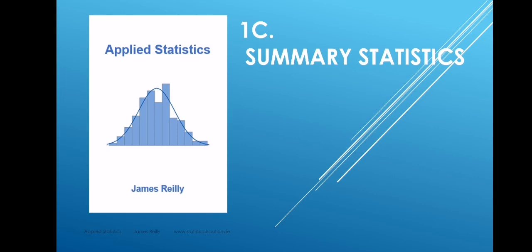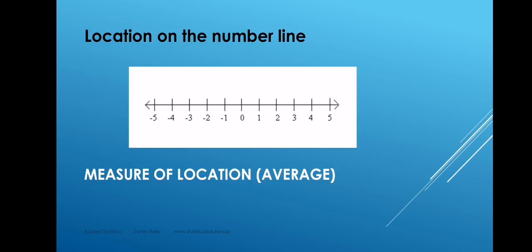A sample average is an example of a summary statistic. The first thing we typically do with a sample is calculate a measure of location, to tell us how large the numbers in the sample typically are. We use the word 'location' to mean where the numbers are located on the number line — how far they are from zero, how big they are. A measure of location simply means an average.